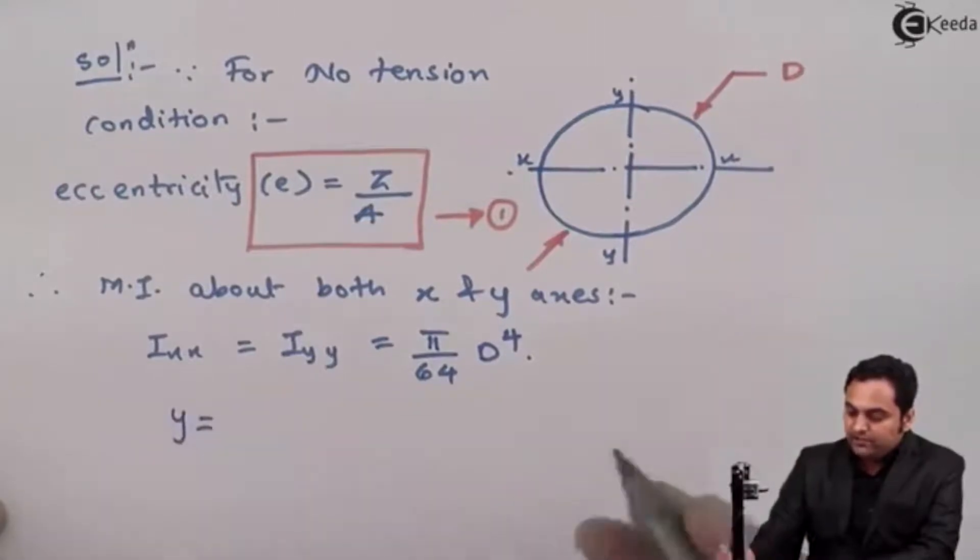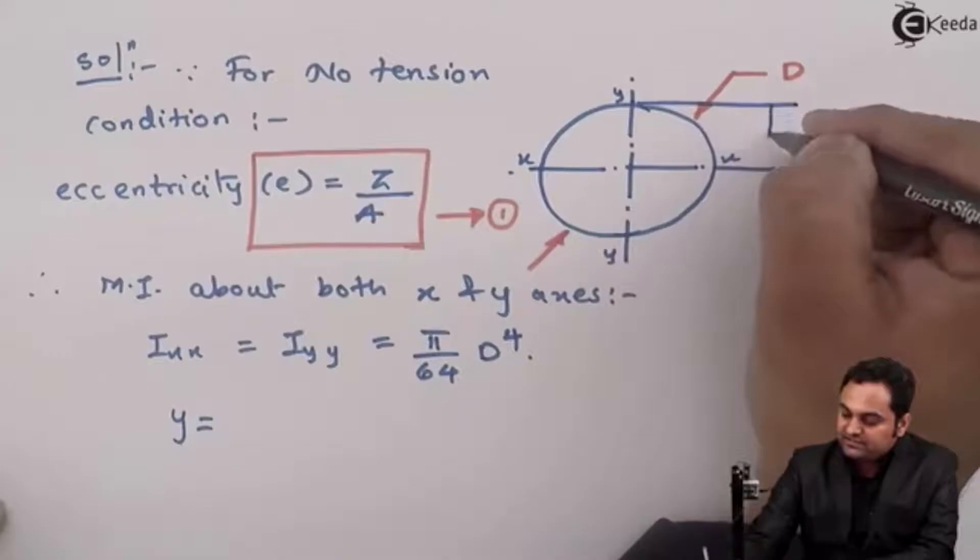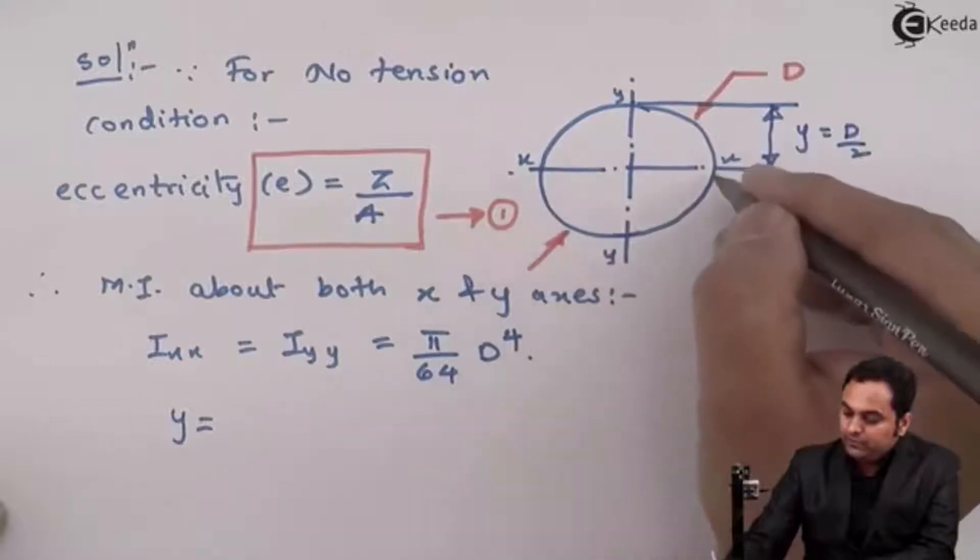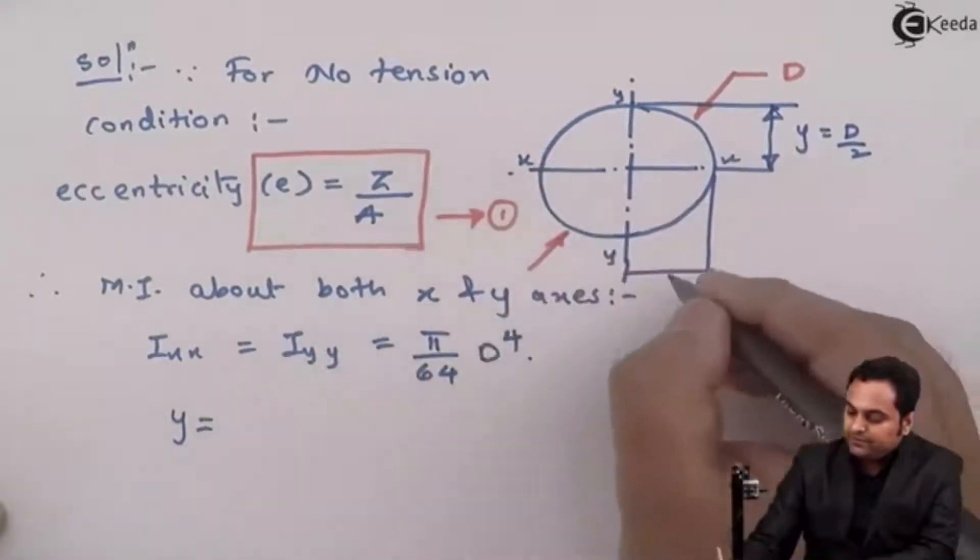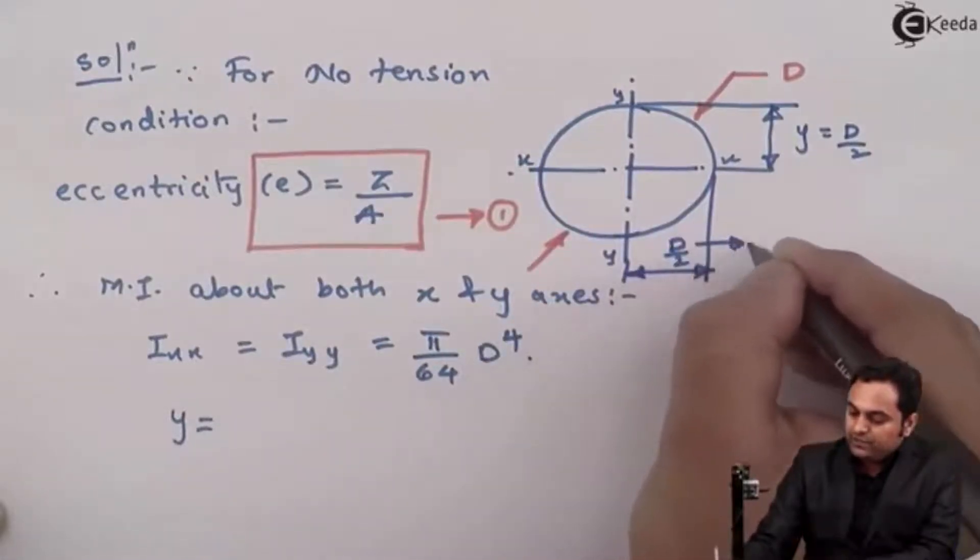Next, Y is the value from the axis to the top most fiber. That is if X axis I take from this to the top most fiber this is Y, D by 2. Similarly, if I take Y axis from this to the extreme most fiber that will be D by 2.